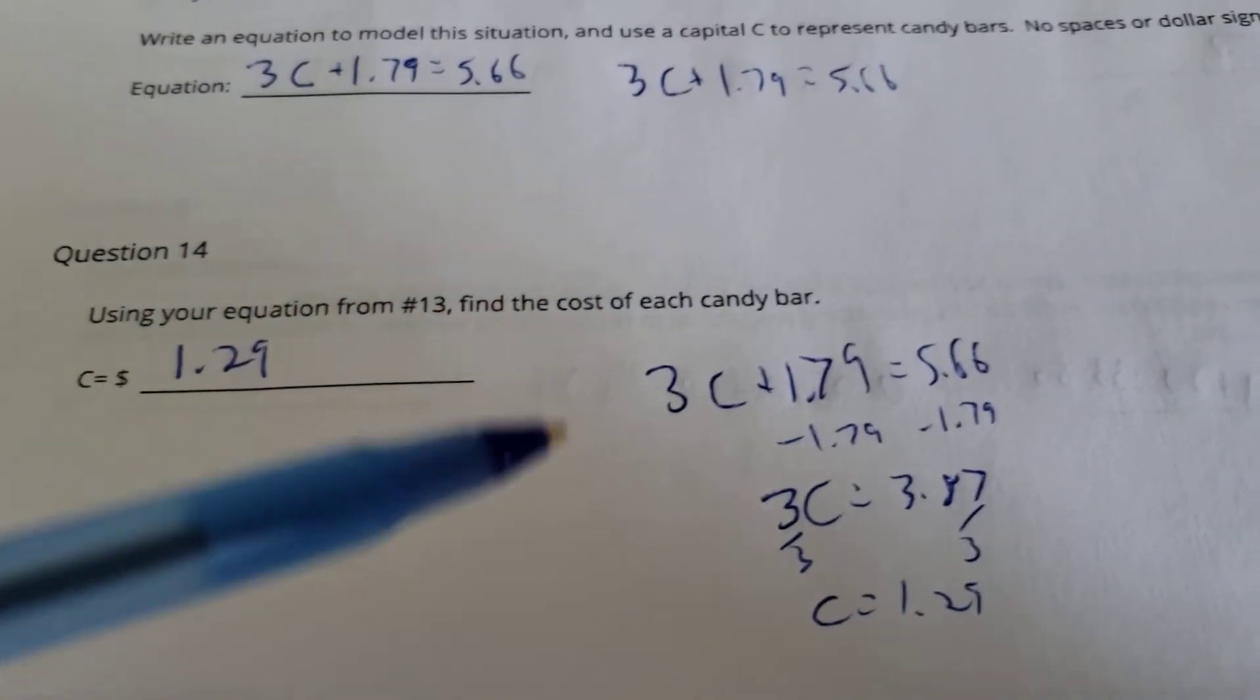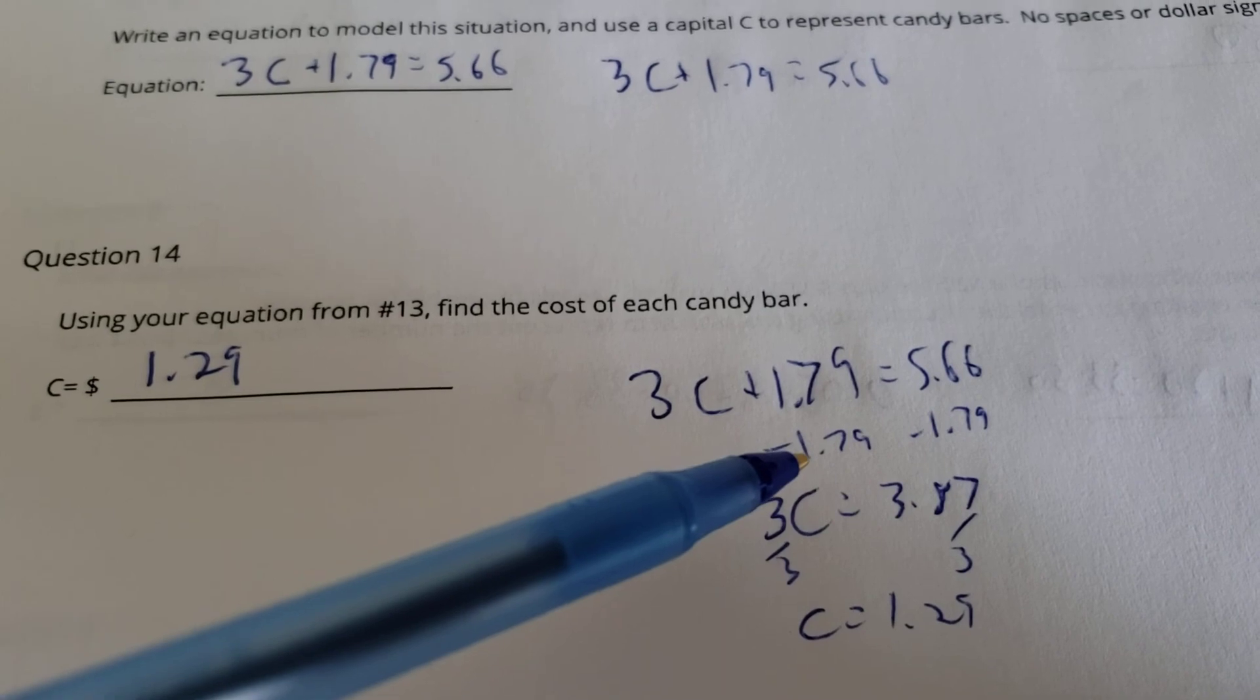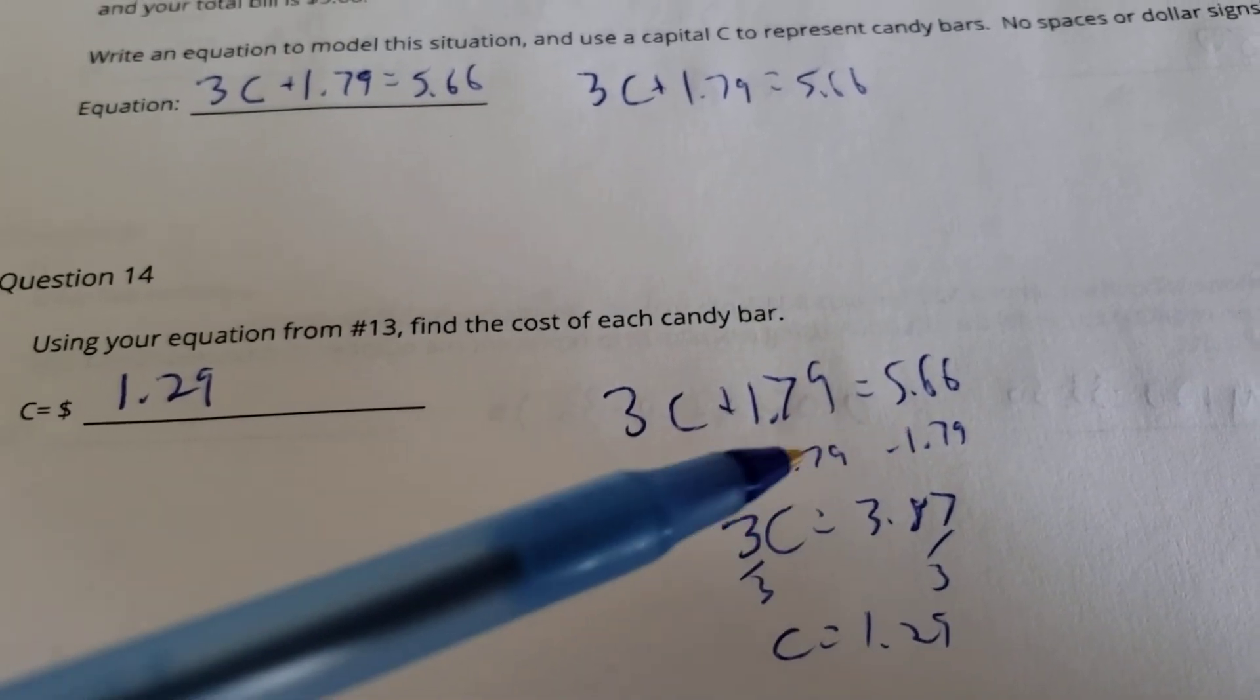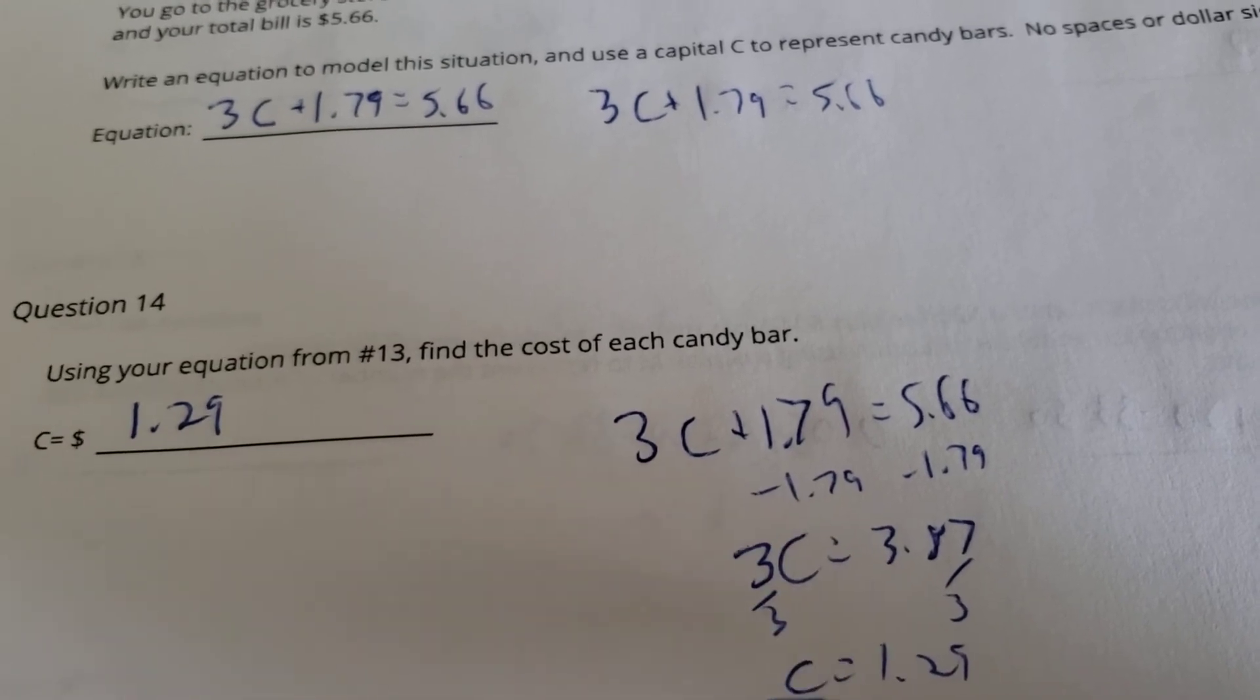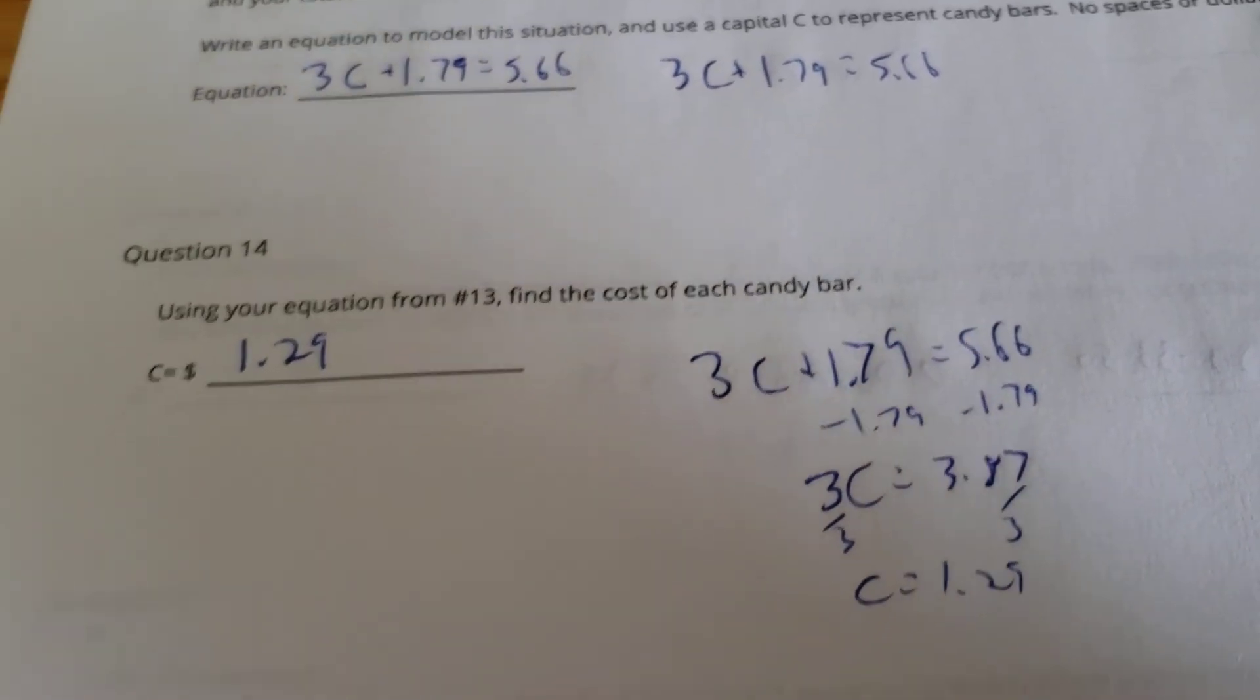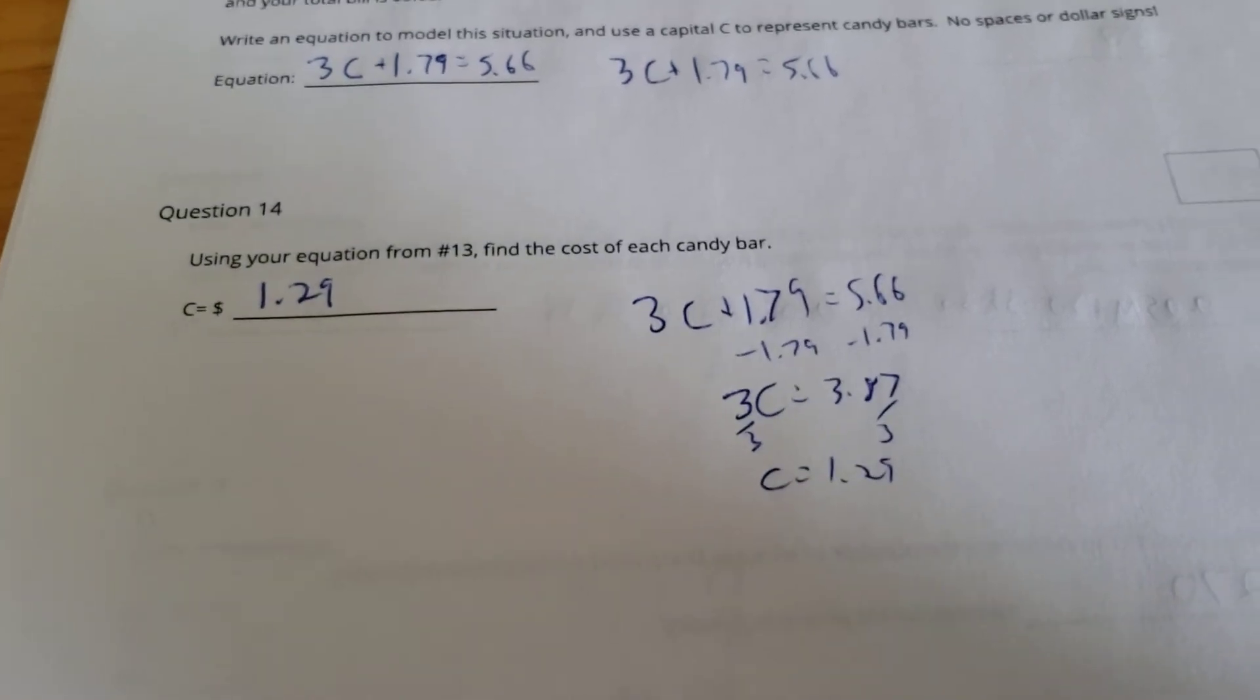Now how do I solve that? Well, I go ahead and take away $1.79 from the hamburger buns out of the equation. These three candy bars cost $3.87. So divide each side by three at this point, and you get the candy bars each cost $1.29. Thanks for watching, and good luck on your tests tomorrow.